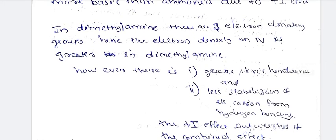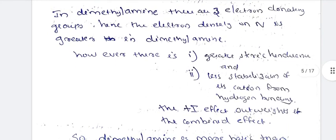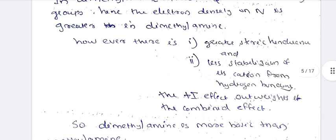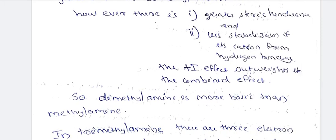Dimethylamine is a secondary amine with two electron-donating groups. The electron density on nitrogen is greater in dimethylamine; however, it also has greater steric hindrance. In primary amine, there is greater hydrogen bonding capacity — three hydrogen bonds from the NH2 group.